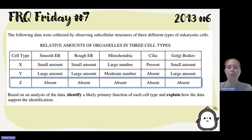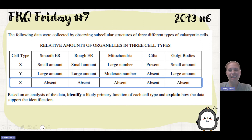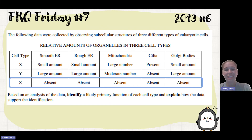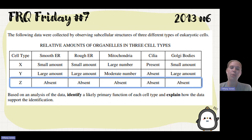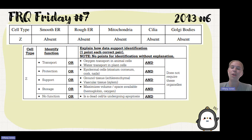The last one is cell Z, and this one usually throws students through a loop — it doesn't have any organelles. Your brain immediately goes to prokaryotic, but remember the prompt told us that these are all eukaryotic cells. So what kind of eukaryotic cell is not going to have any organelles? Oftentimes, cells responsible for transport — your red blood cells carrying hemoglobin have no organelles because we need to transport oxygen throughout the body. You also see it in dead cells that don't require those organelles.